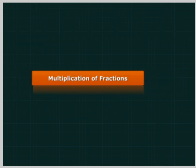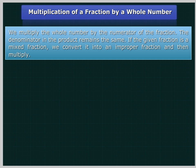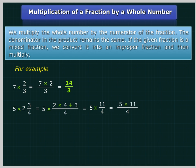Multiplication of fractions. To multiply a fraction by a whole number, we multiply the whole number by the numerator of the fraction; the denominator in the product remains the same. If the given fraction is a mixed fraction, we convert it into an improper fraction and then multiply. For example, 7 multiplied by 2 upon 3 is equal to 14 upon 3. And 5 multiplied by 2 and 3 upon 4 is equal to 5 multiplied by 11 upon 4, which is equal to 55 upon 4.